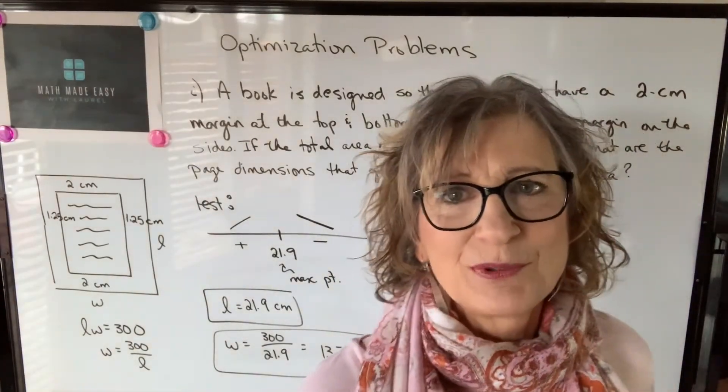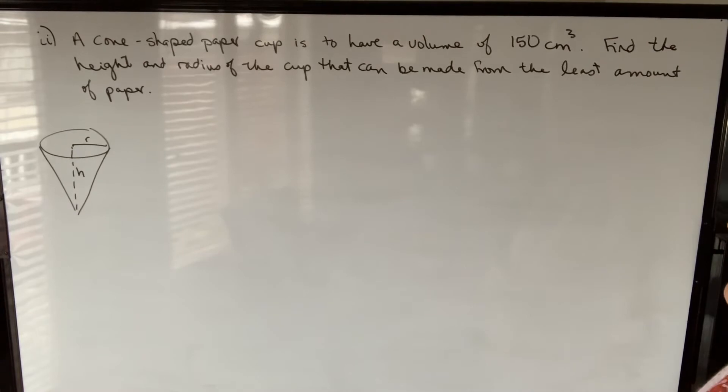Let's try one more example. A cone-shaped paper cup is to have a volume of 150 cubic centimeters. Find the height and radius of the cup that can be made from the least amount of paper.